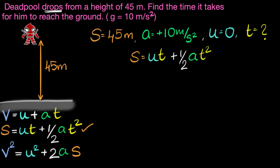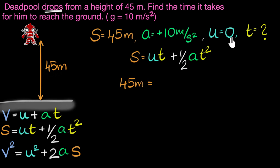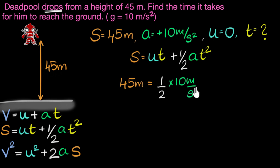Now would be a great time to pause and see if you can plug in the values. Let's go ahead and substitute. S is 45 meters, that equals U — which is zero, so this whole term goes to zero — plus half times A, which is 10 meters per second squared, times T squared. Now all we have to do is solve this equation and we'll be done.